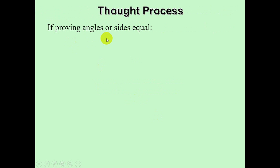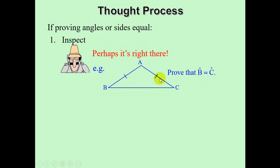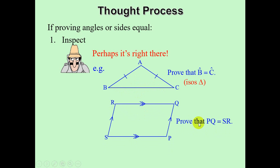If we are proving angles or sides equal, number one — inspect. Perhaps it's right there. As an example, if we need to prove that angle B is equal to angle C, and we look at triangle ABC, this is an isosceles triangle, therefore the angles opposite the equal sides will be equal. Another example: if we need to prove that PQ is equal to SR, this figure is a parallelogram, and one of the properties of a parallelogram is that opposite sides are equal.